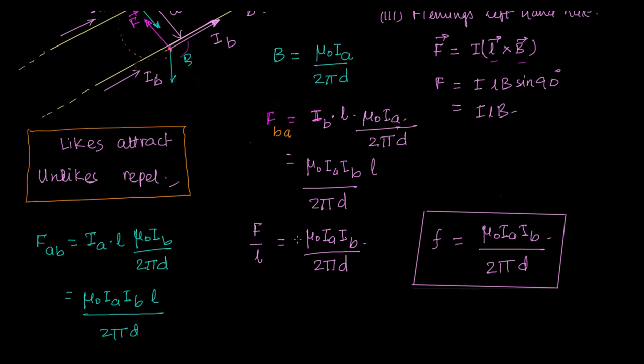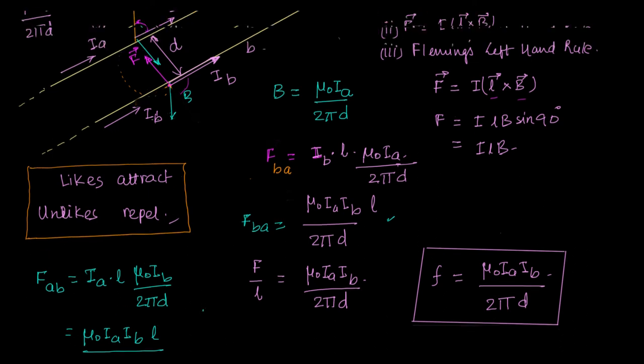Get that? Now, if you compare, then this FBA, the value of FBA, the magnitude part of it, let me erase this. The magnitude part are the same. Mu0 IA IB L and 2 pi D in the denominator. They are the same. And the direction is opposite.